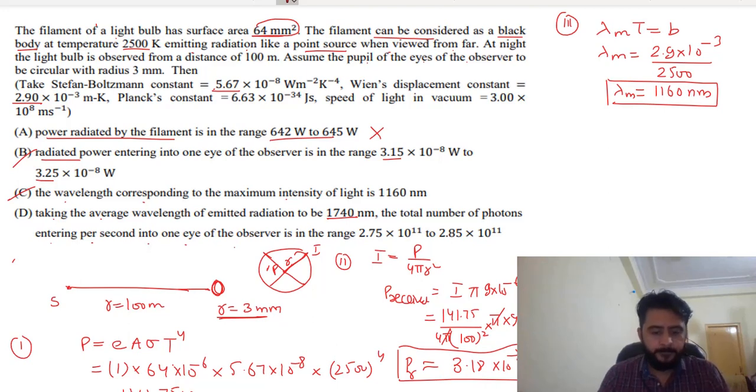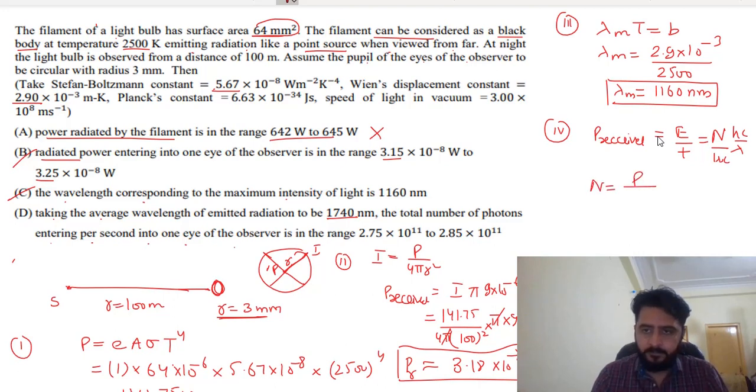The power received is I times A. This is energy per second. The energy that one photon has is hc/λ. If you write photons per second, power upon energy per photon: power upon hc by lambda. Power is 3.18×10⁻⁸, and hc by lambda - if I put lambda in nanometers, this will be equal to hc equals 1242 eV.